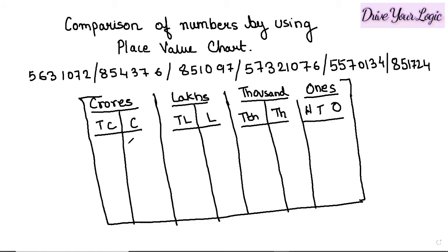Now, the given numbers — you will write them into the chart as they are. When you start writing, always start from the ones place on the right side — that will be far easier and less confusing. So: two, seven, zero, one, three, six, five — that gives us 56 lakh, thirty-one thousand and seventy-two.